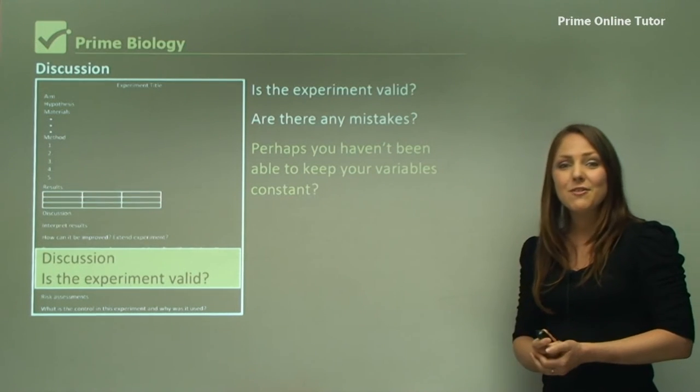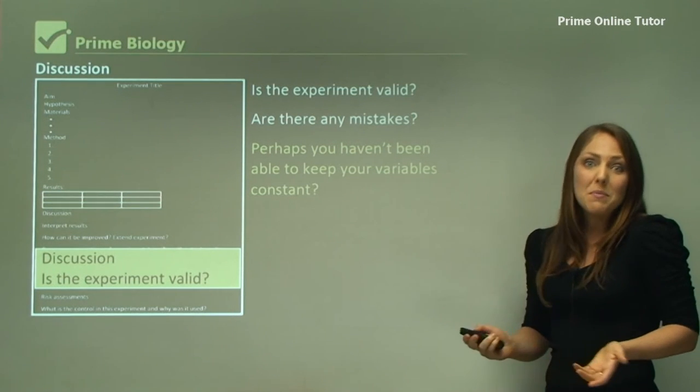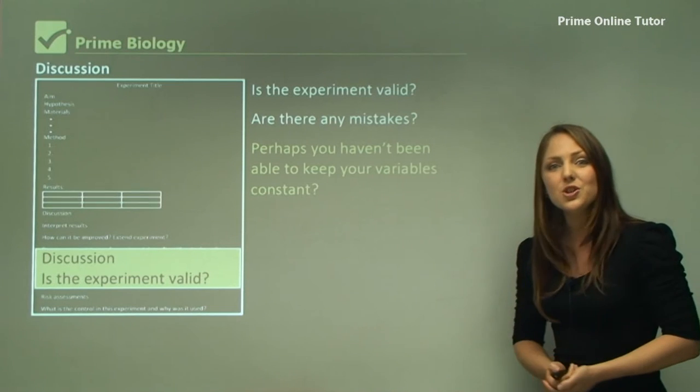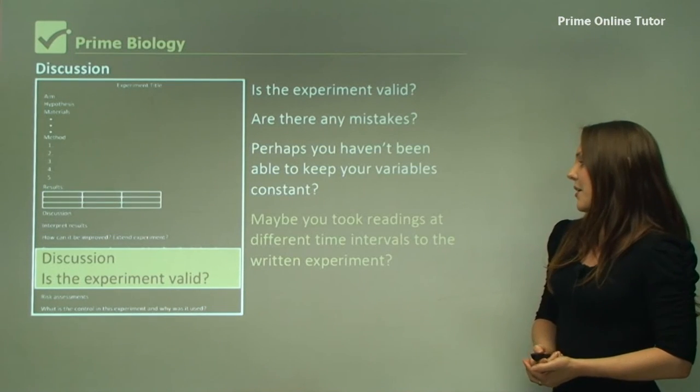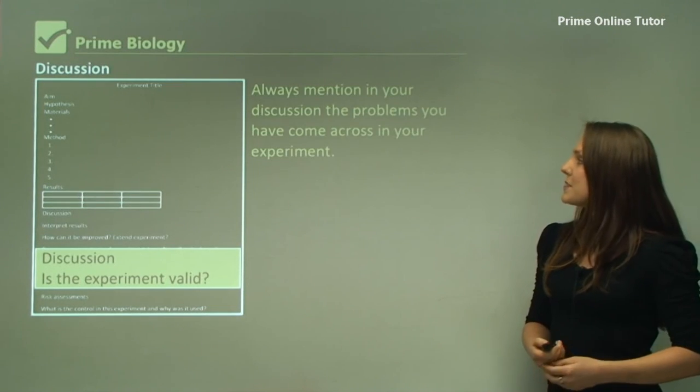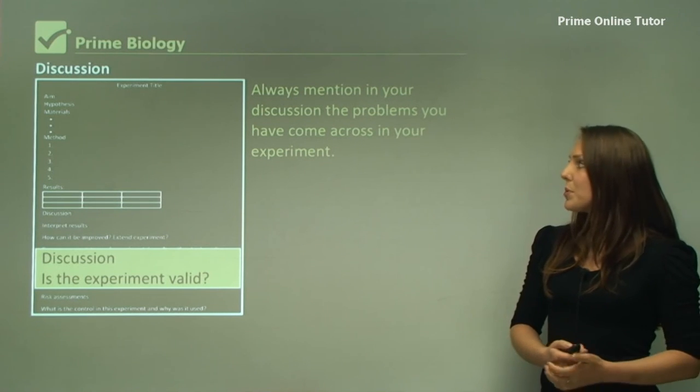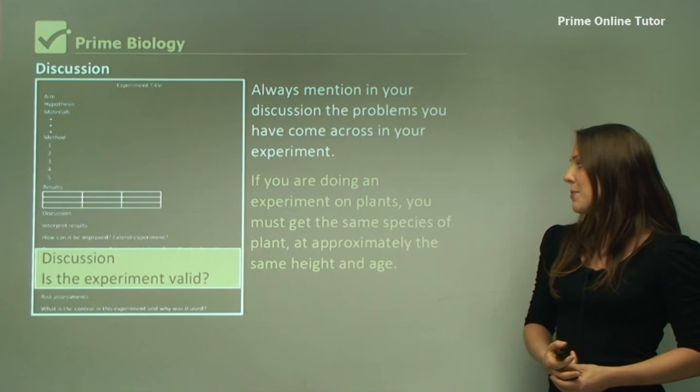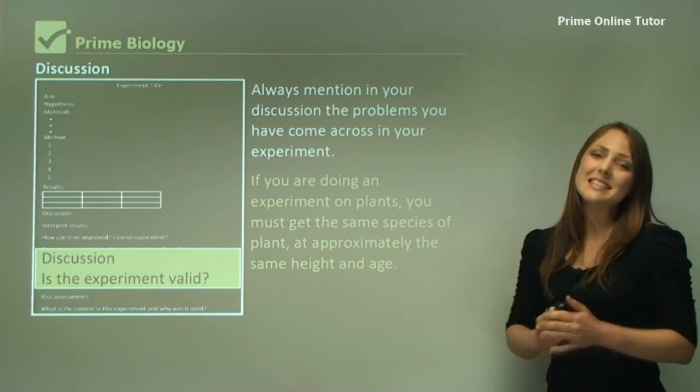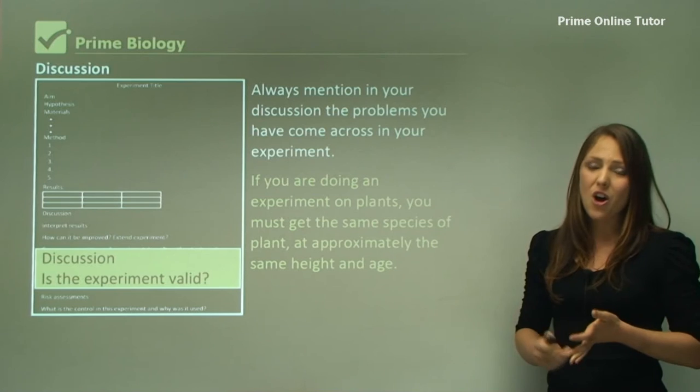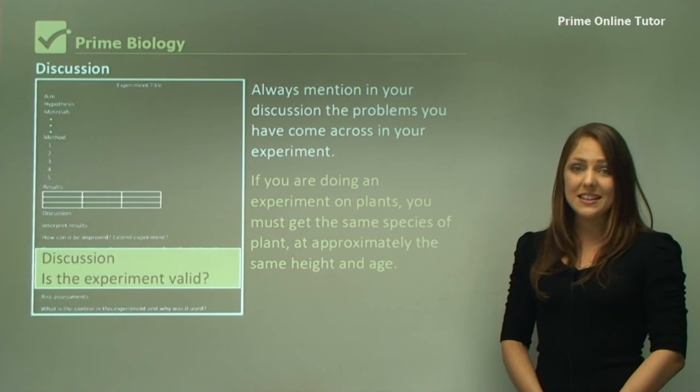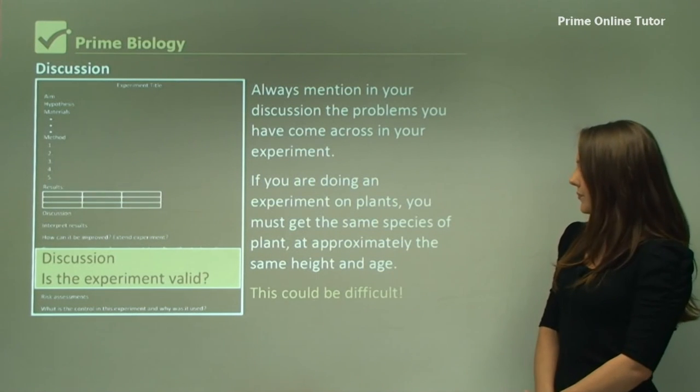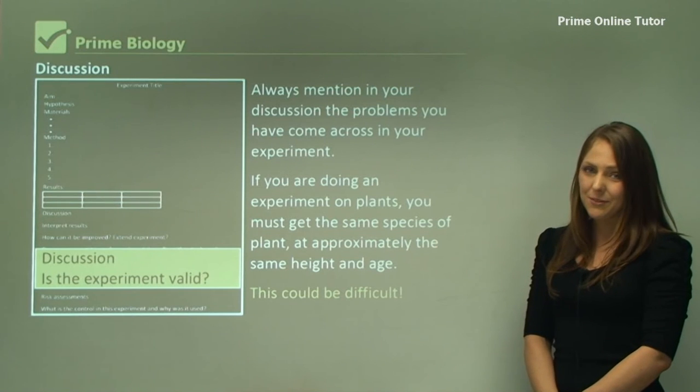Maybe you took the reading at every 15 seconds by mistake. You need to actually put this in your discussion. Always mention in your discussion the problems you have come across in your experiment. If you're doing an experiment on plants, you must get the same species of plant at the same age and the same height, otherwise your experiment is invalid.